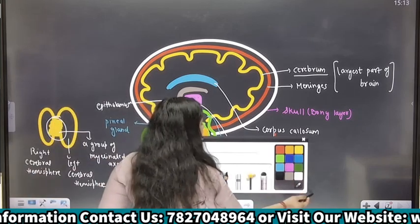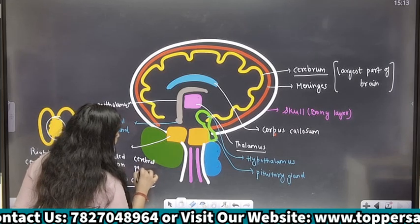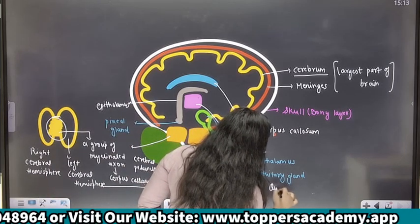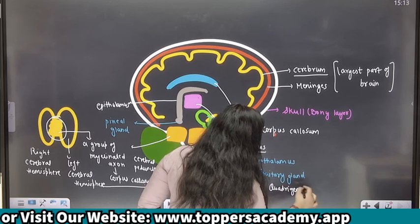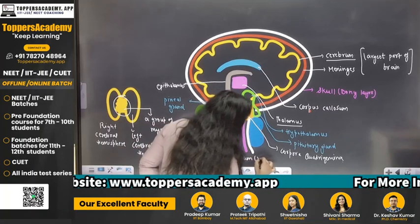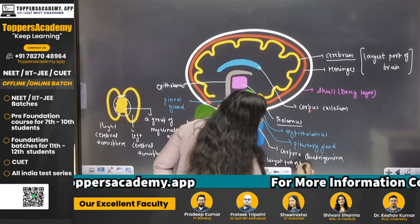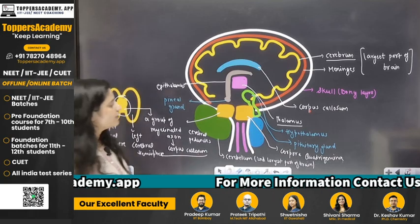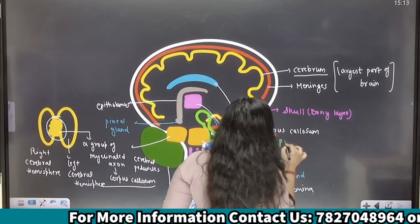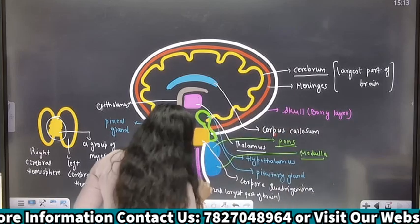Yeh aapka midbrain ho gaya. Suppose yaha par cerebral peduncle ho gaya, and this side is your corpora quadrigemina. Ab yaha par aapka second largest part of brain which is cerebellum — it helps in balancing your body, I will teach you when I give you all the functions. This upper part is your pons, and yeh jo lower part hai, this is your medulla. Brain stem dikh raha hai? Beech mein ek cord hai.